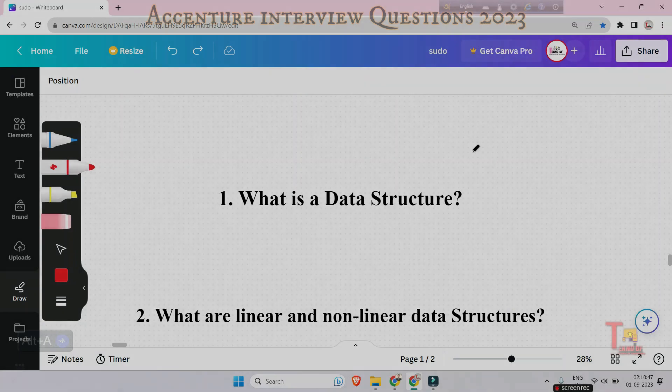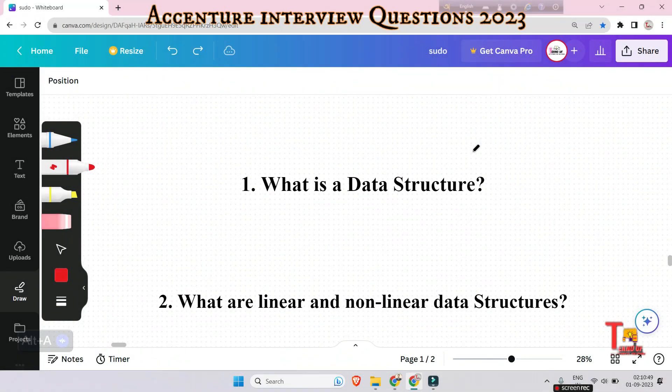What is data structure? A data structure is a way of organizing data so that the data can be used efficiently. Examples include stack, queue, tree, hash, linked list, etc.